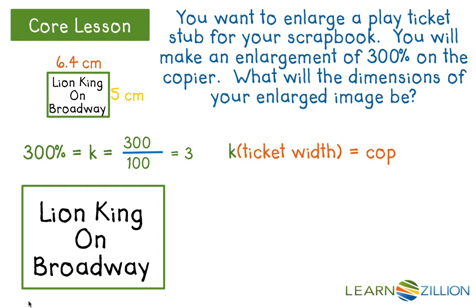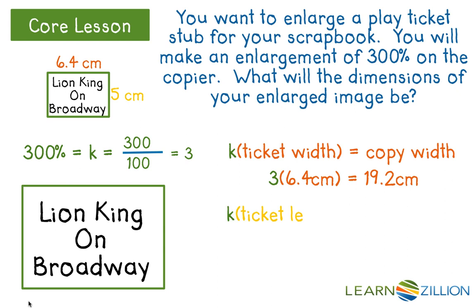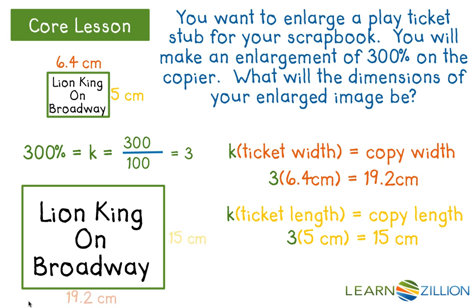If we take the K value times the ticket width, we'll get the copy width. So if we take 3 times 6.4 centimeters, we get a copy width of 19.2 centimeters. If we take K times the ticket length, we will get the copy length. So 3 times 5 centimeters is equal to 15 centimeters. Therefore, the dimensions of our enlarged image will be 15 centimeters by 19.2 centimeters.